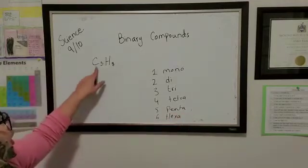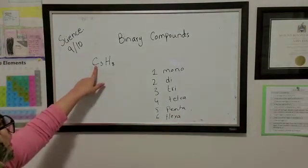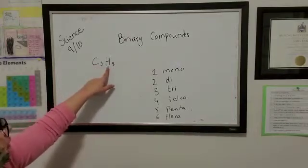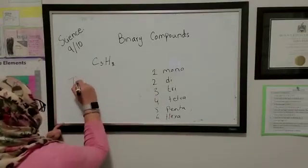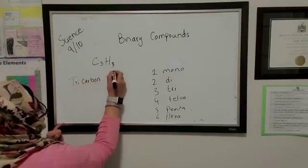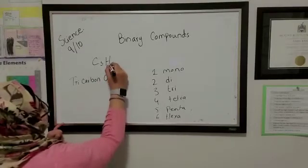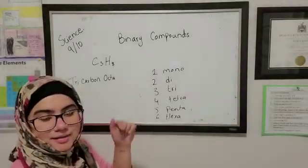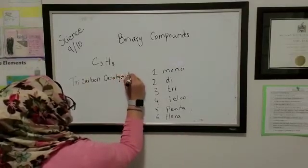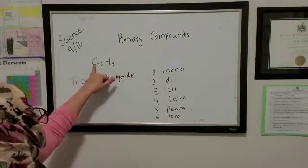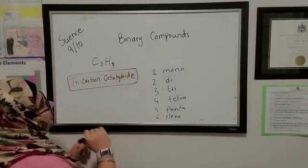All right. So I have this binary compound over here. So how are we going to name this compound? So we know this is carbon element and this element is hydrogen. So we're going to name it, this is three. So tricarbon. Eight octa, hydrogen. So remember I said we ended with the ide suffix. So hydride. So octahydride. So tricarbon octahydride is the name of this binary compound.